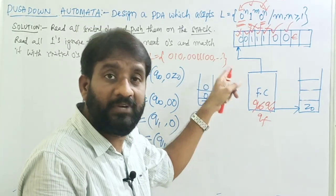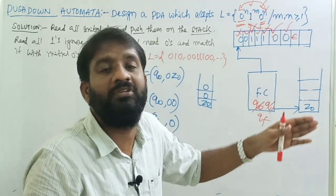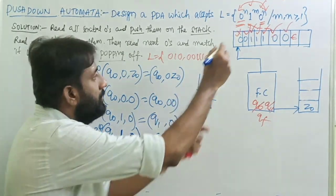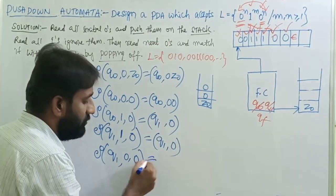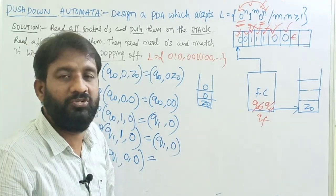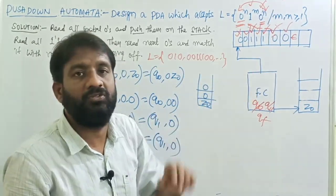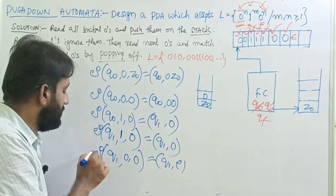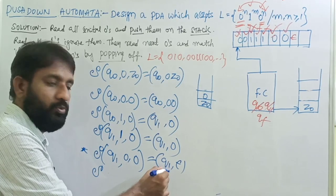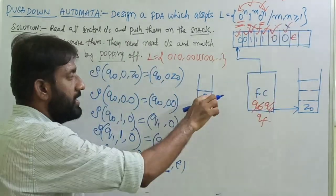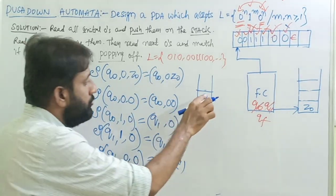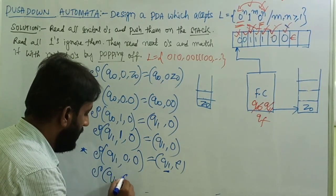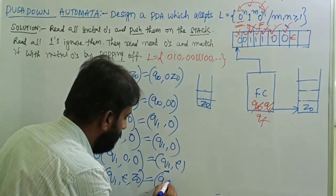Once all ones are completed, the second zeros start. Since the first zeros are already in the stack, map the second zeros with the first zeros by doing the pop operation. Transition of q1 with input symbol 0 and top of stack 0: remain in the same state, do the pop operation — transition to q1, epsilon. Repeat this for all zeros. At last, on state q1 with epsilon input and Z-naught on top: transition to q1, epsilon, Z-naught → qf, Z-naught.